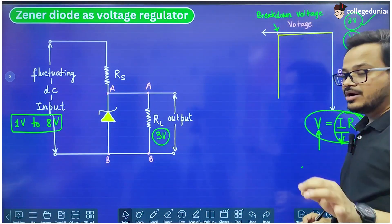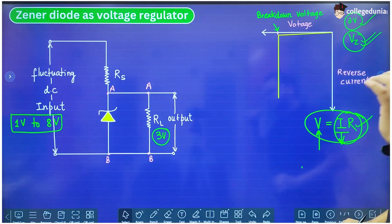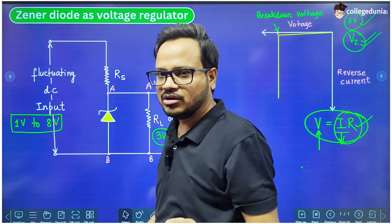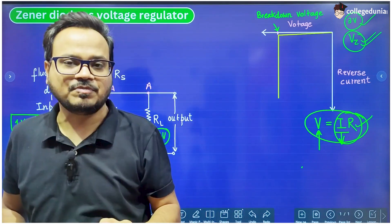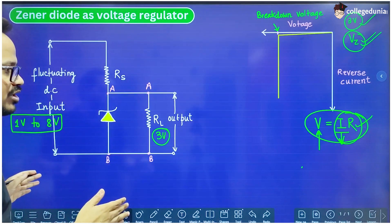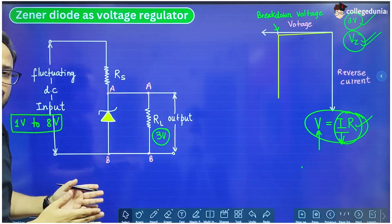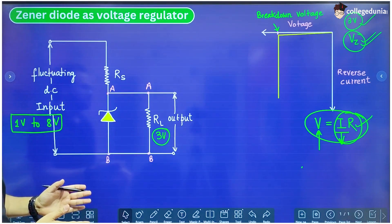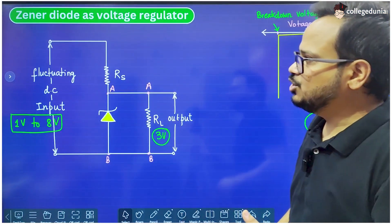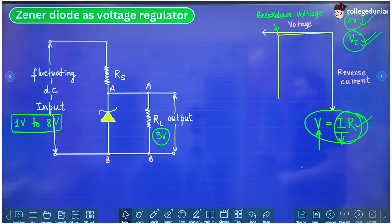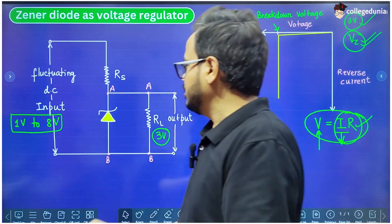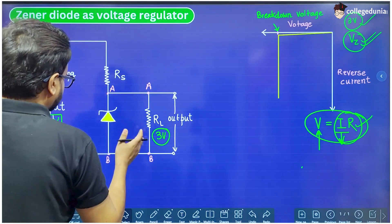We are not discussing the mechanism behind the working of Zener diode because that is not the topic of discussion for this particular video. We will focus only on the working of Zener diode as voltage regulator. If you have any confusion regarding the working of Zener diode, you should watch the other videos. In this video we are focusing only on how we can use the Zener diode to fix the voltage across an output.